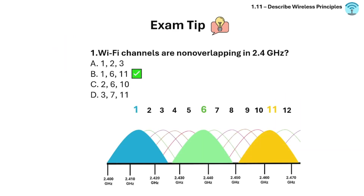Exam tip to remember: 2.4 GHz has three non-overlapping channels — channels 1, 6, and 11.